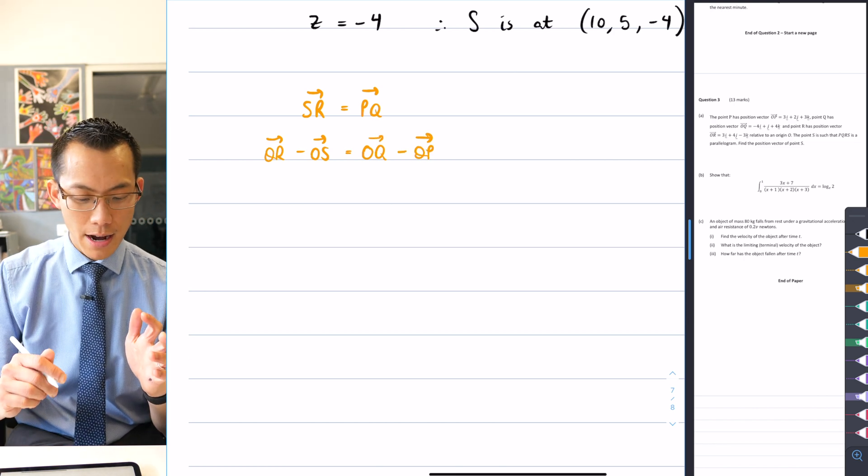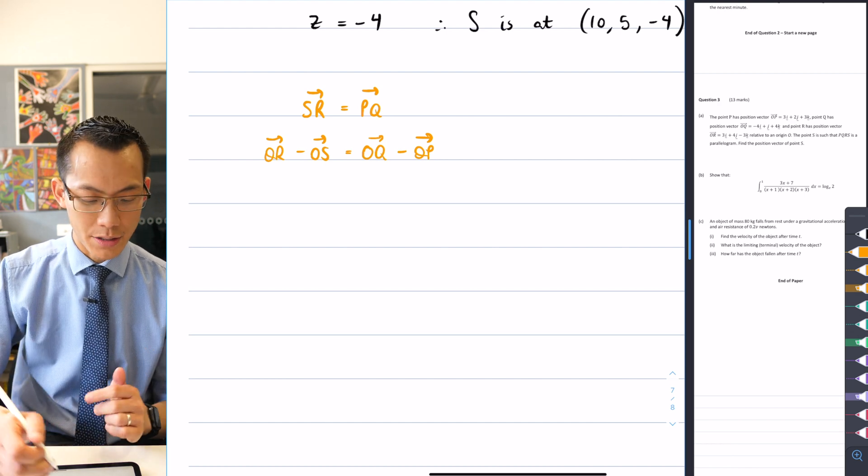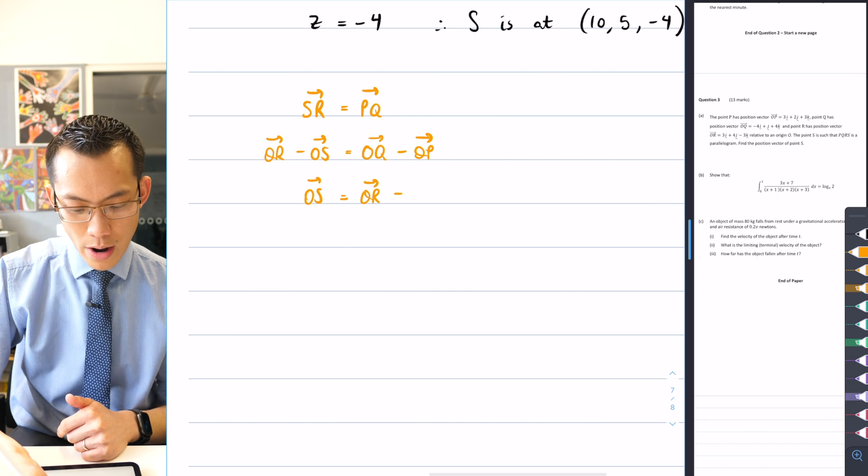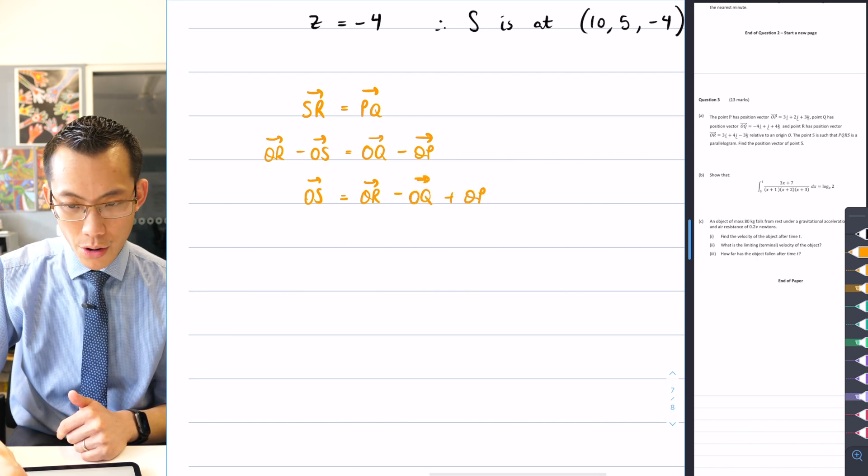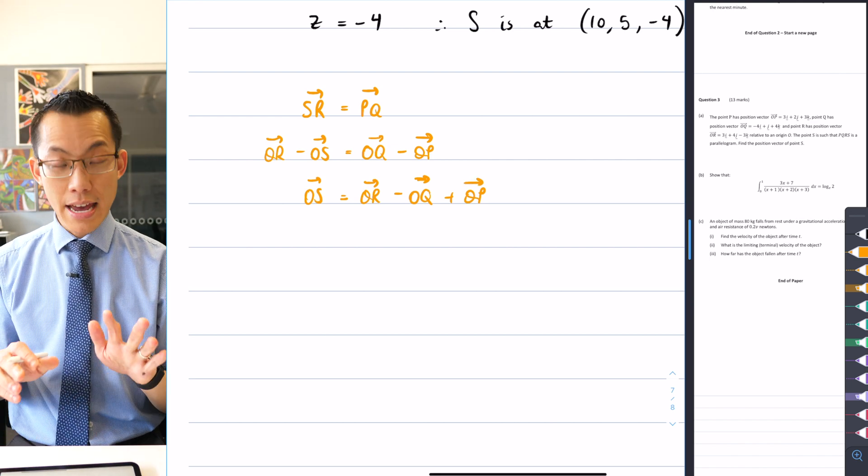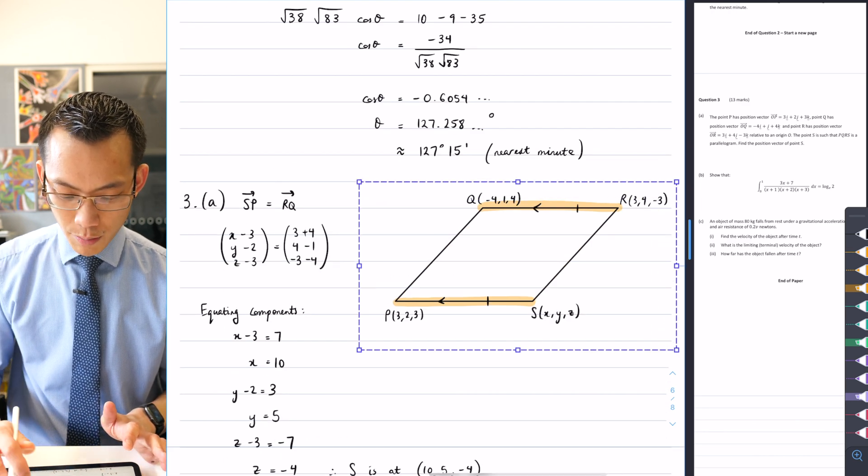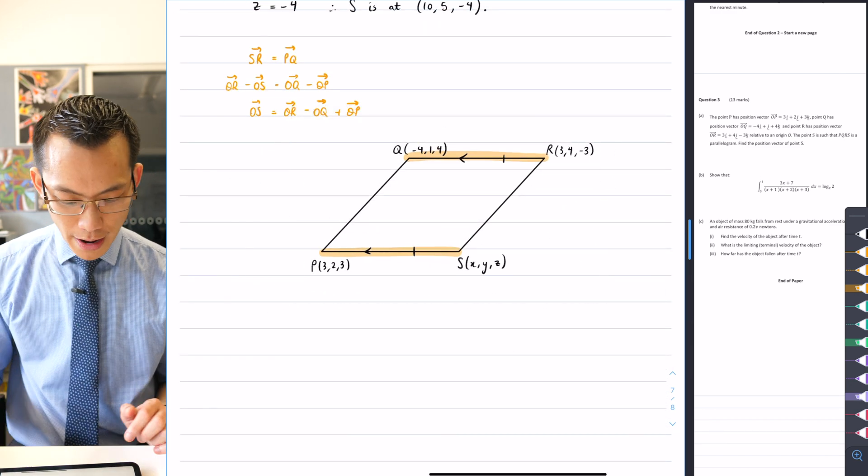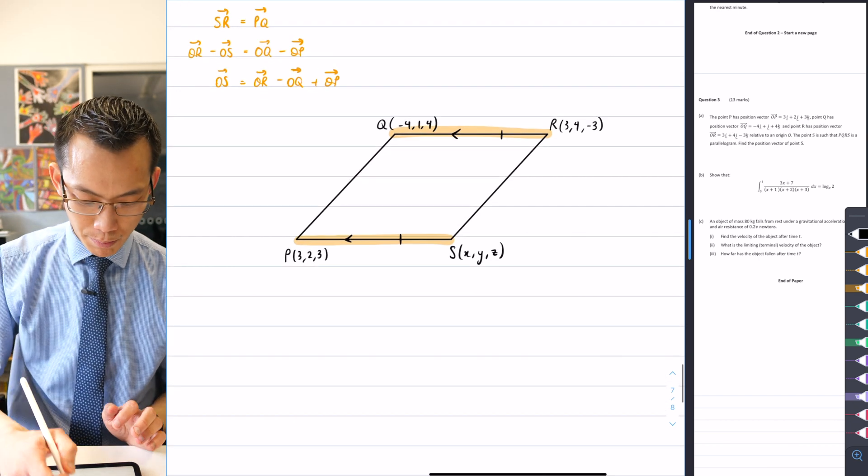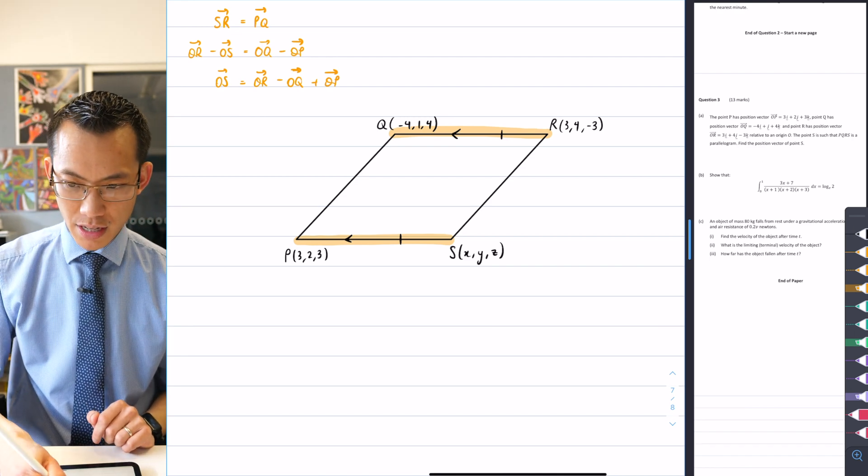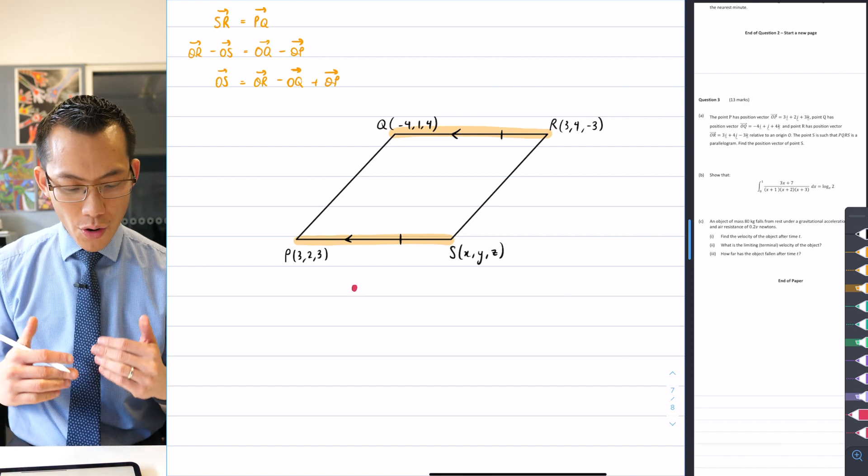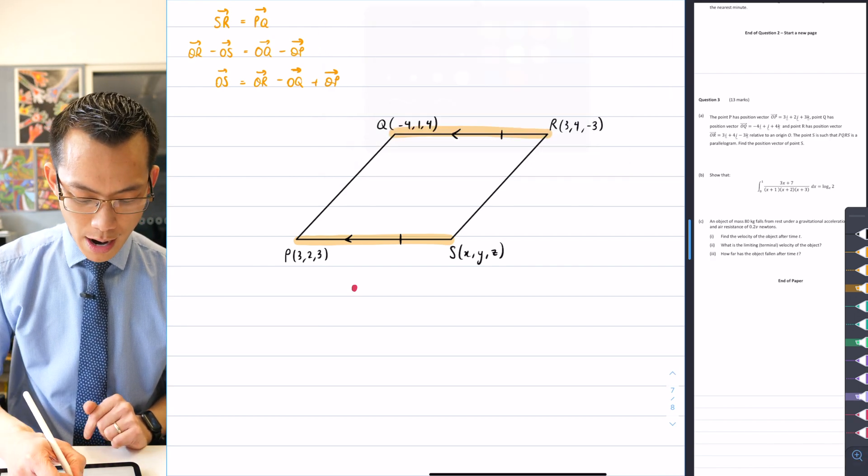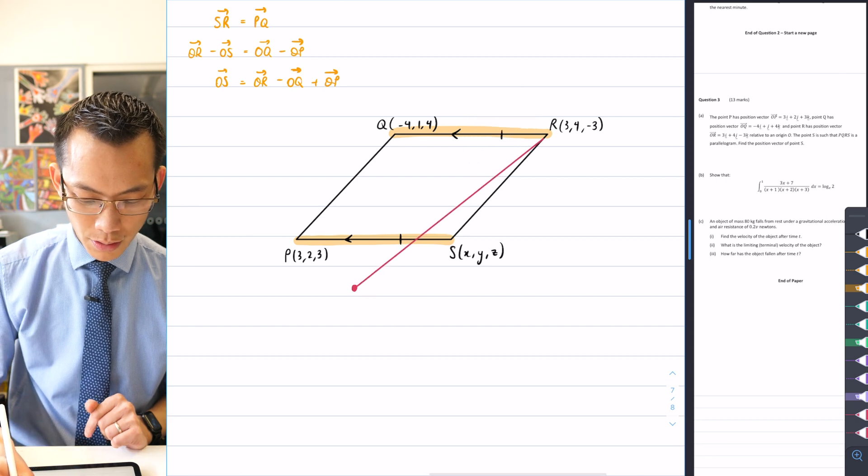So they said the way to say SR, if I do that in vector notation, is OR take away OS, and the same thing for the right hand side is OQ take away OP. So that's all fine. I can then add OS to both sides, and then subtract everything on the right hand side from both sides. So I get OS equals OR take away OQ plus OP. And this result, I should clarify, is exactly right. Let me prove it to you.